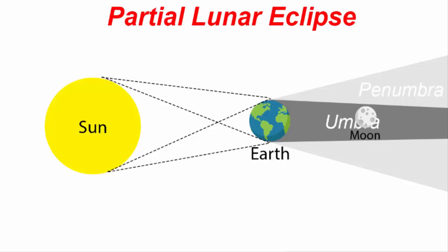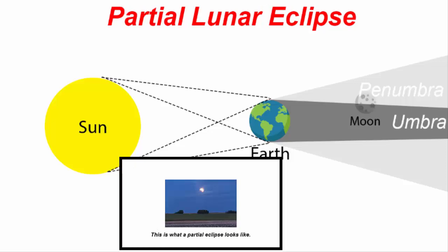In a partial lunar eclipse, the umbra takes a bite out of only a fraction of the moon. The dark bite grows larger and then recedes, never reaching the total face.